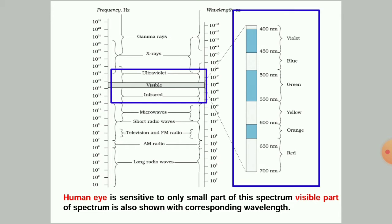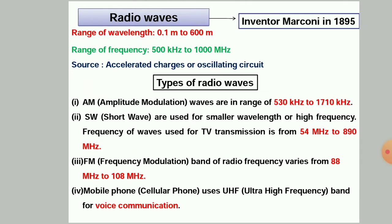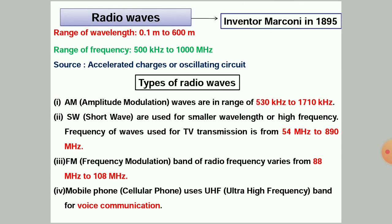One important part is the visible range, which goes from 400 nanometers to 700 nanometers. Now, first we discuss radio waves. Their inventor was Marconi, a scientist, in 1895. The range of wavelength of these waves starts from 0.1 meter to 600 meters, and the range of frequency starts from 500 kilohertz to 1000 megahertz.